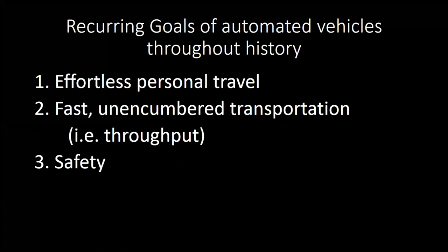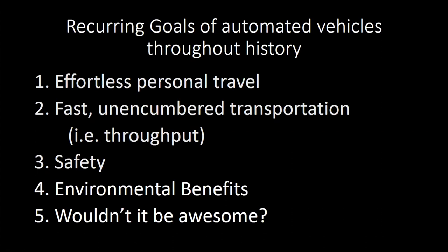There have been a number of different goals for automated vehicles throughout history. One of the most common is effortless personal travel — the idea that you can simply get in the car and relax. Second is unencumbered transportation: eliminating traffic jams and getting from point A to point B without any worries. Third is safety, which has always been present but until recently was never the primary purpose. More recently since the 90s, there's been a push for environmental benefits, and underlying most of this from the very beginning is simply the excitement of creating an amazing new technology.